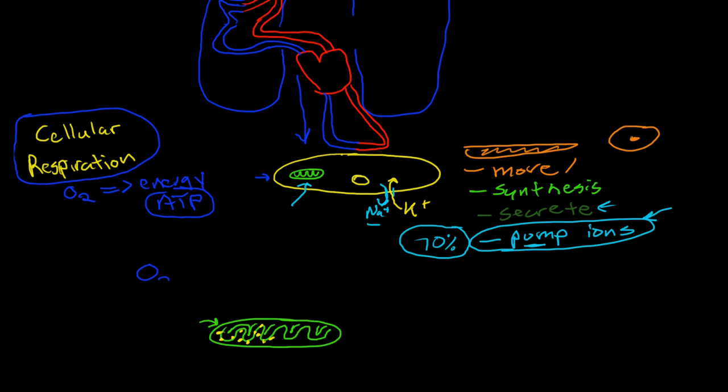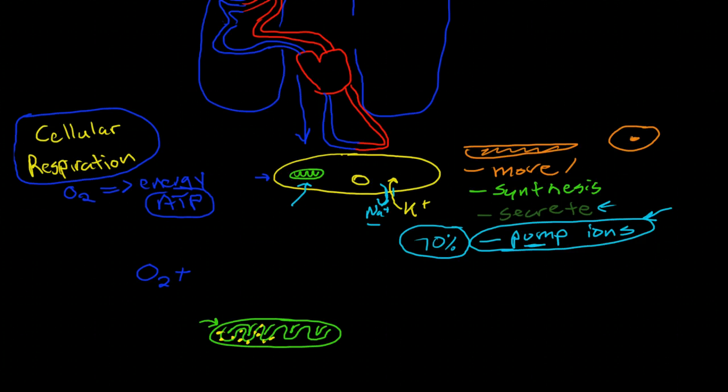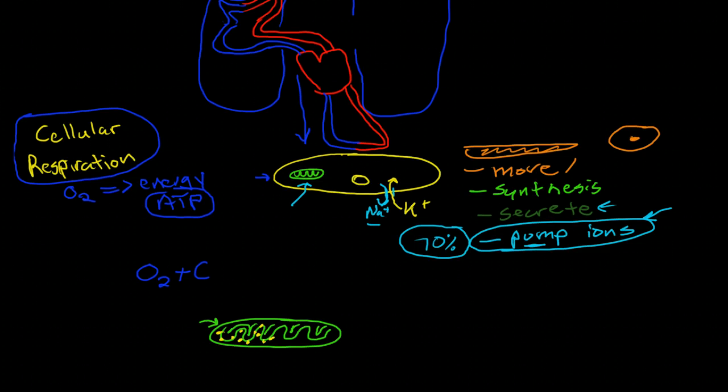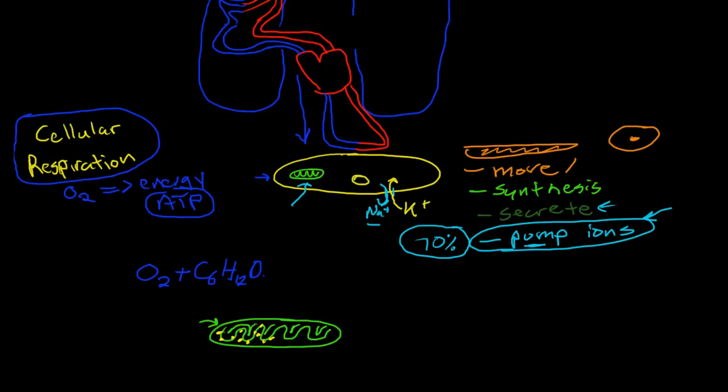So they use oxygen from the environment and then they use oftentimes glucose, but they may use other substrates as well, proteins, amino acids, and fatty acids. And this is just a glucose molecule here, just as an example.